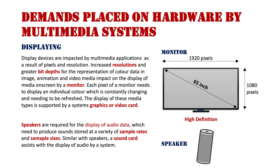Speakers are similarly required for the display of audio data, which is stored in a variety of sample rates and sample sizes — high-quality audio needs to be produced by a speaker. A sound card is needed on a system to convert that digital sound into real-world sound. For displaying: images, video, and animation use monitors; sound uses speakers. We can also use projectors for displaying video, and full stereo sound systems. These three categories — storage and retrieval, processing, and display — all overlap with one another.